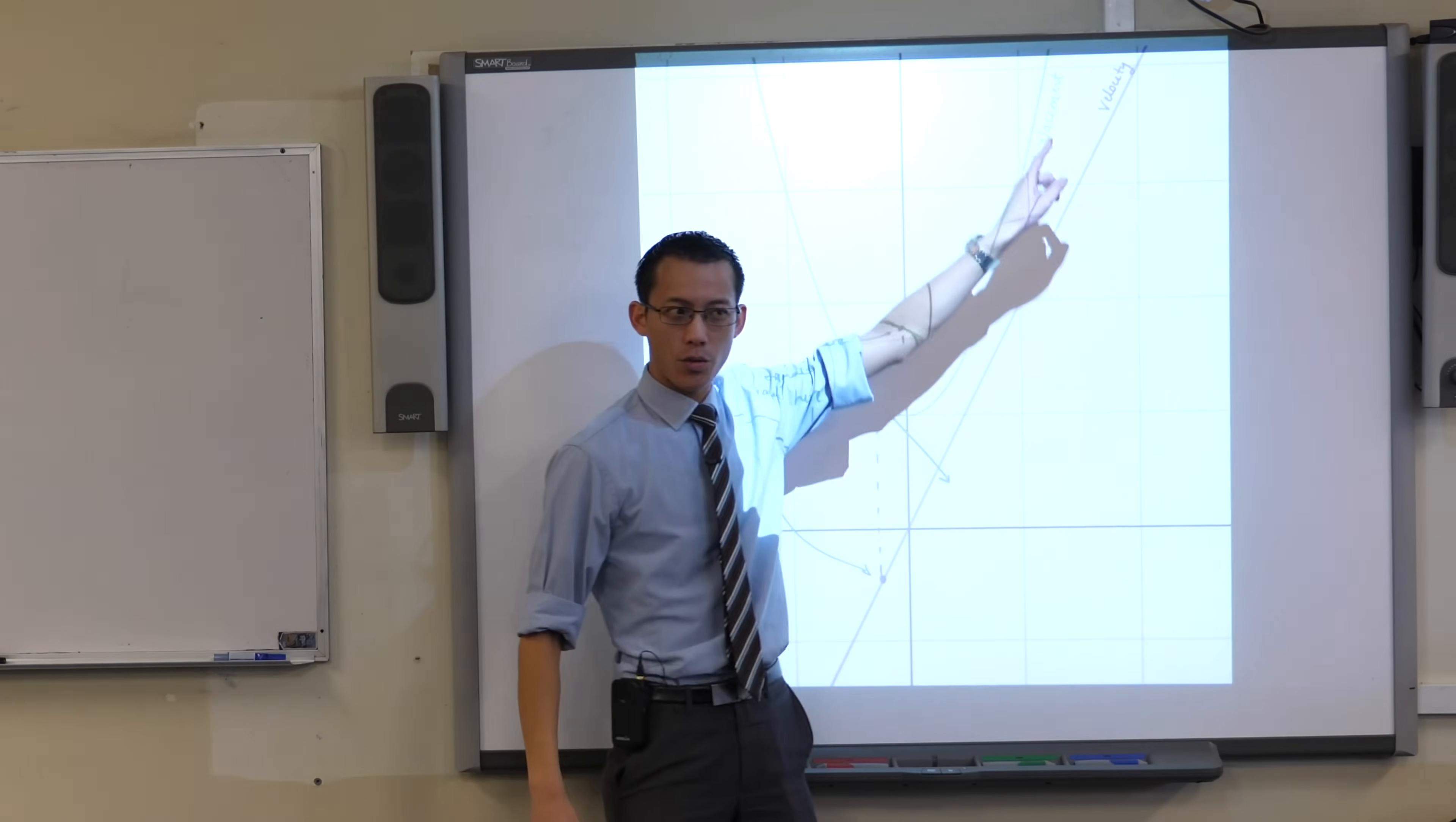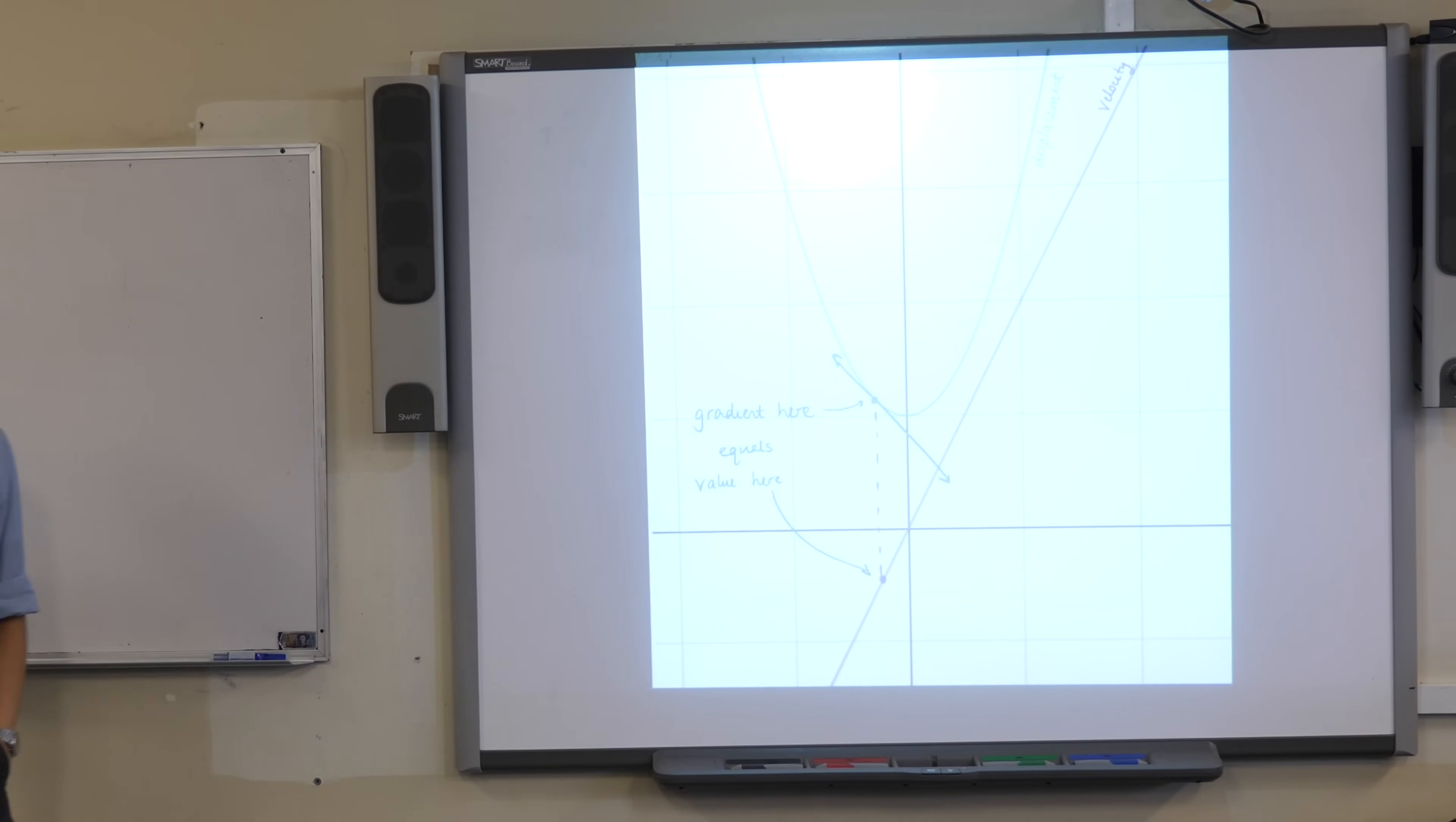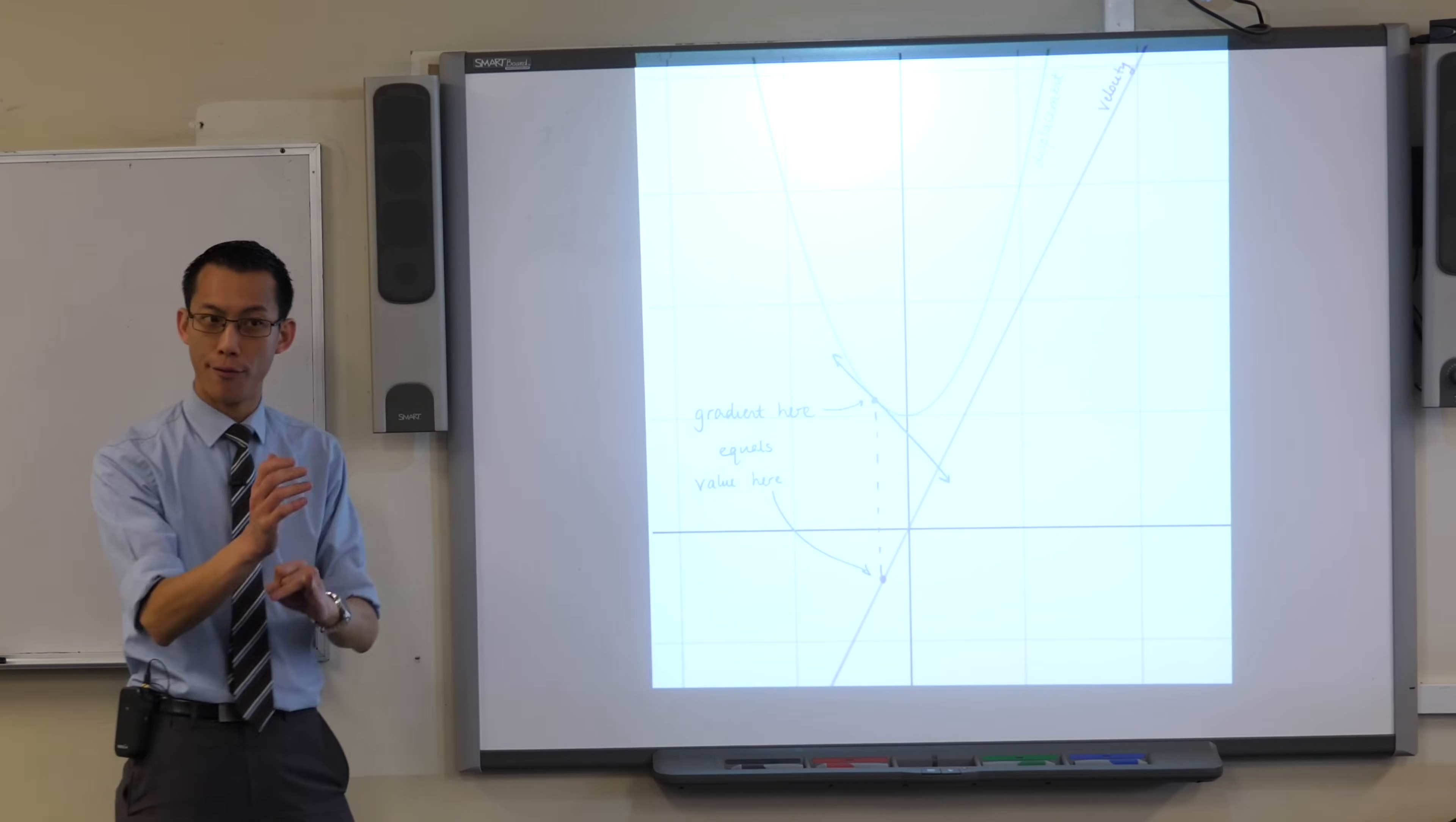If you've got a displacement graph then we've established that the first derivative with respect to time x dot gives you the velocity graph, right? And I just want you to focus on what that means geometrically. The gradient of this tangent corresponds to how fast are you going and in what direction. That's the vector part of velocity.